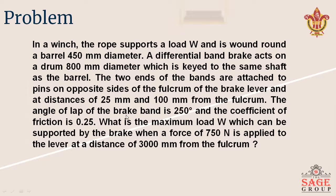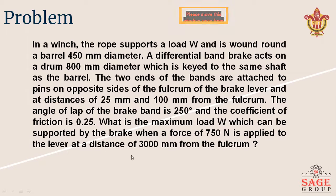The angle of wrap of the brake band is 250 degrees, that means theta equals 250 degrees. The coefficient of friction mu is equal to 0.25. What is the maximum load W which can be supported by the brake when a force of 750 Newton is applied to the lever at a distance of 3000 mm from the fulcrum? So L equals 3000 mm and P equals 750 Newton.